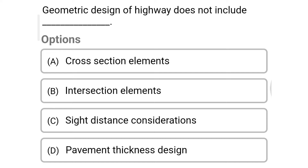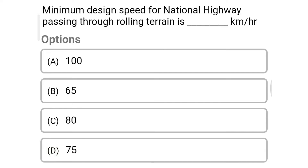option B: intersection elements, option C: side distance considerations, option D: pavement thickness design. The correct answer is option D, pavement thickness design.